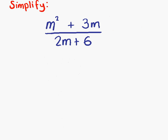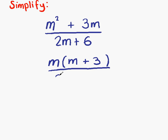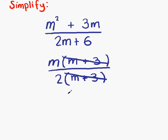This is our last example. We want to see if we can simplify again. The first thing we check is if we can factorize on the top and the bottom. Our common factor on the top line is m, so we have m outside the bracket: m times m gives us m squared, and m times 3 gives us 3m. On the bottom line, we also have a common factor, which is 2: 2 times m gives us 2m, and 2 times 3 gives us 6. Our brackets are exactly the same, so we can cancel them. That leaves us with m over 2, which is our final answer.